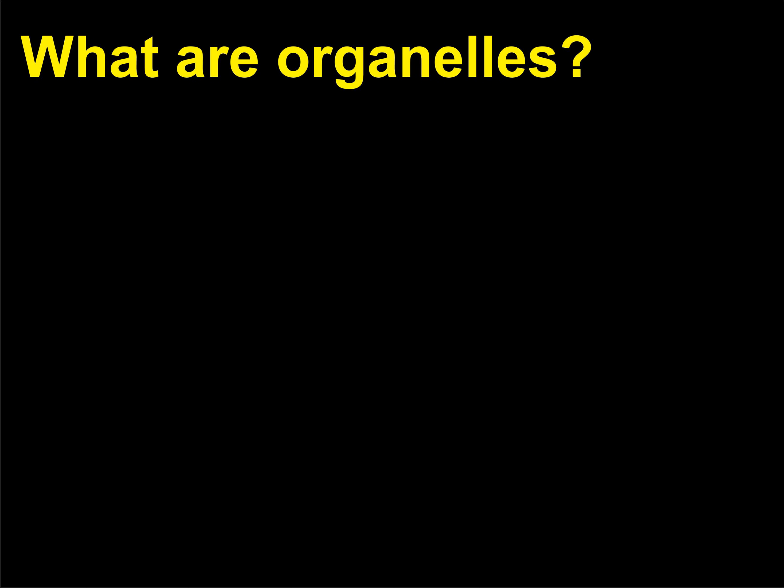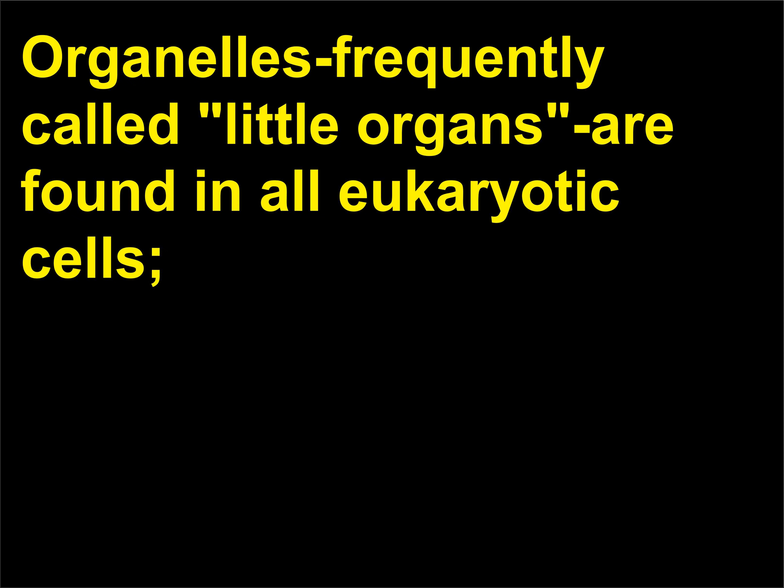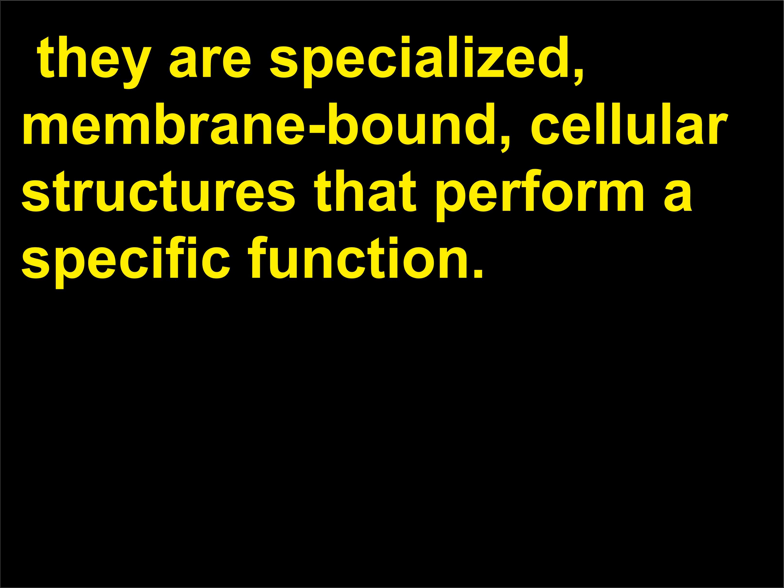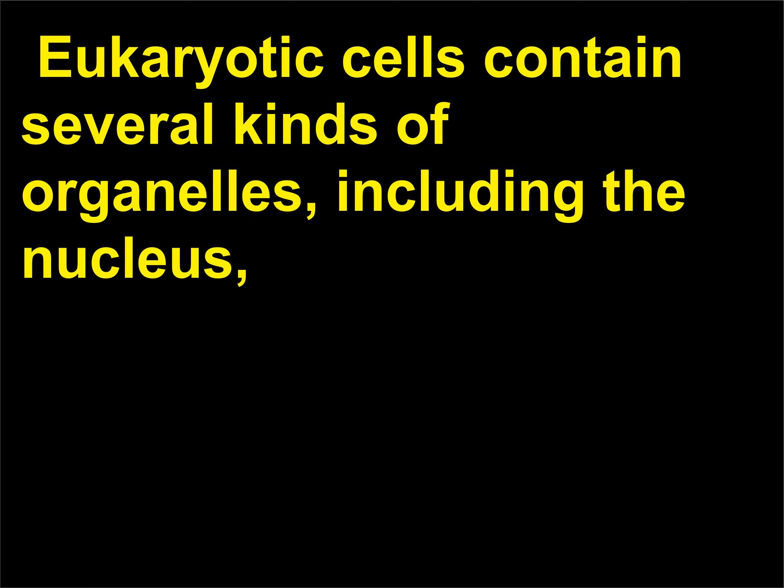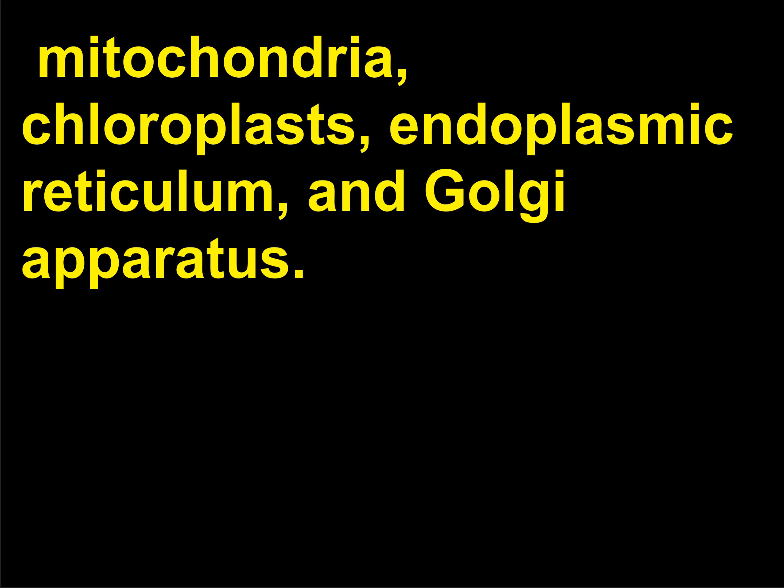What are organelles? Organelles, frequently called little organs, are found in all eukaryotic cells. They are specialized, membrane-bound, cellular structures that perform a specific function. Eukaryotic cells contain several kinds of organelles, including the nucleus, mitochondria, chloroplasts, endoplasmic reticulum, and Golgi apparatus.